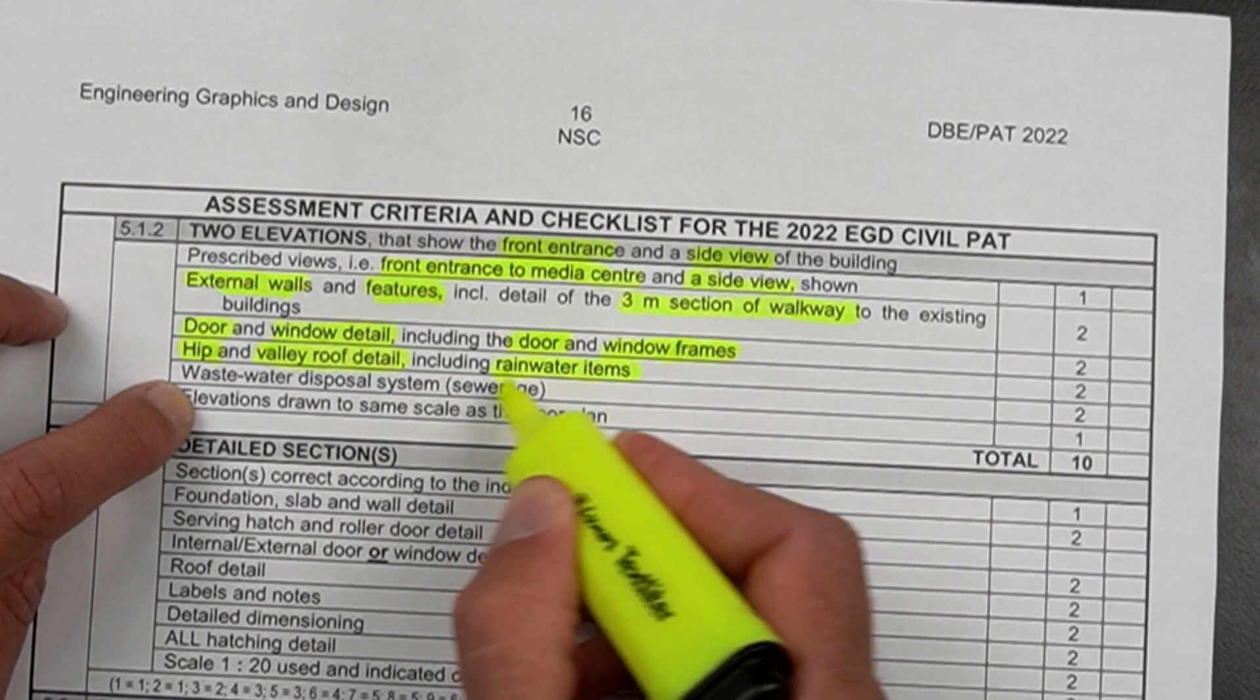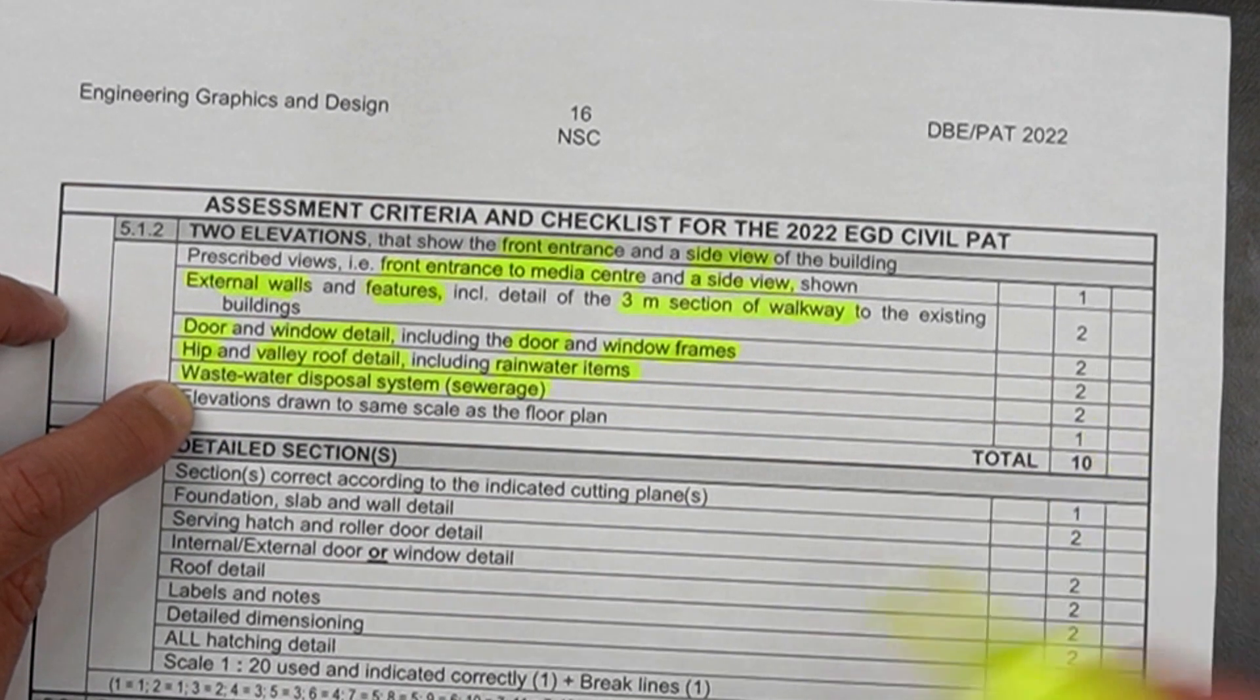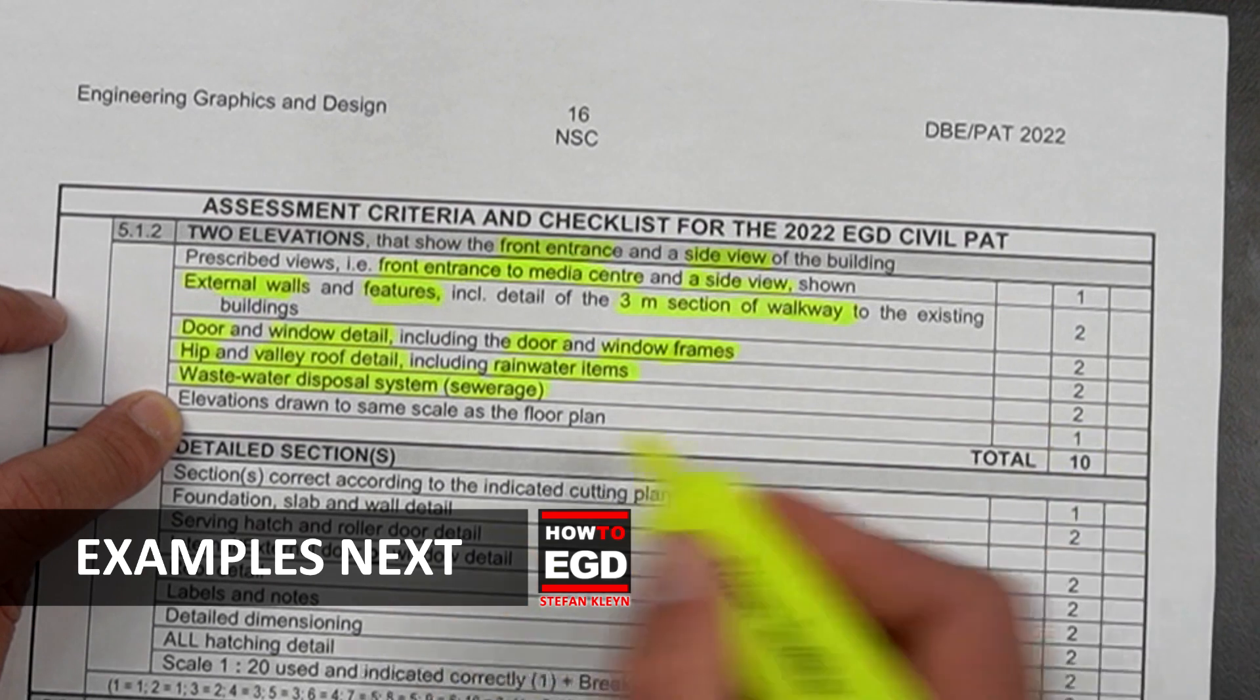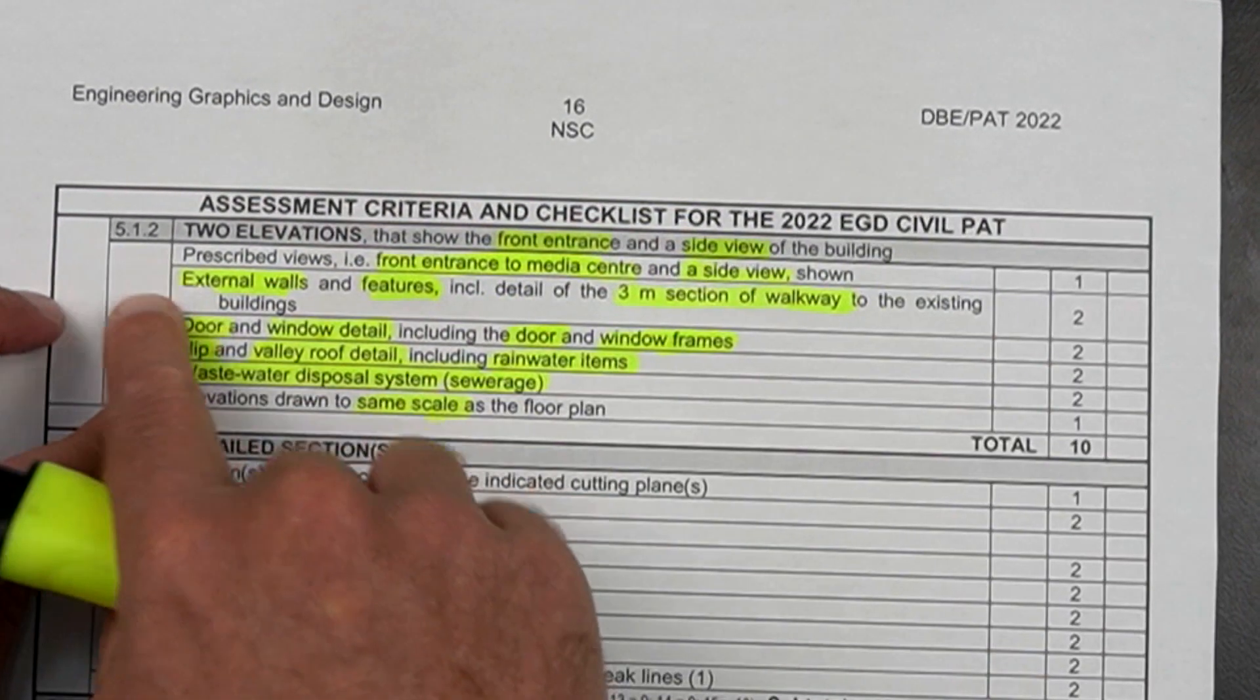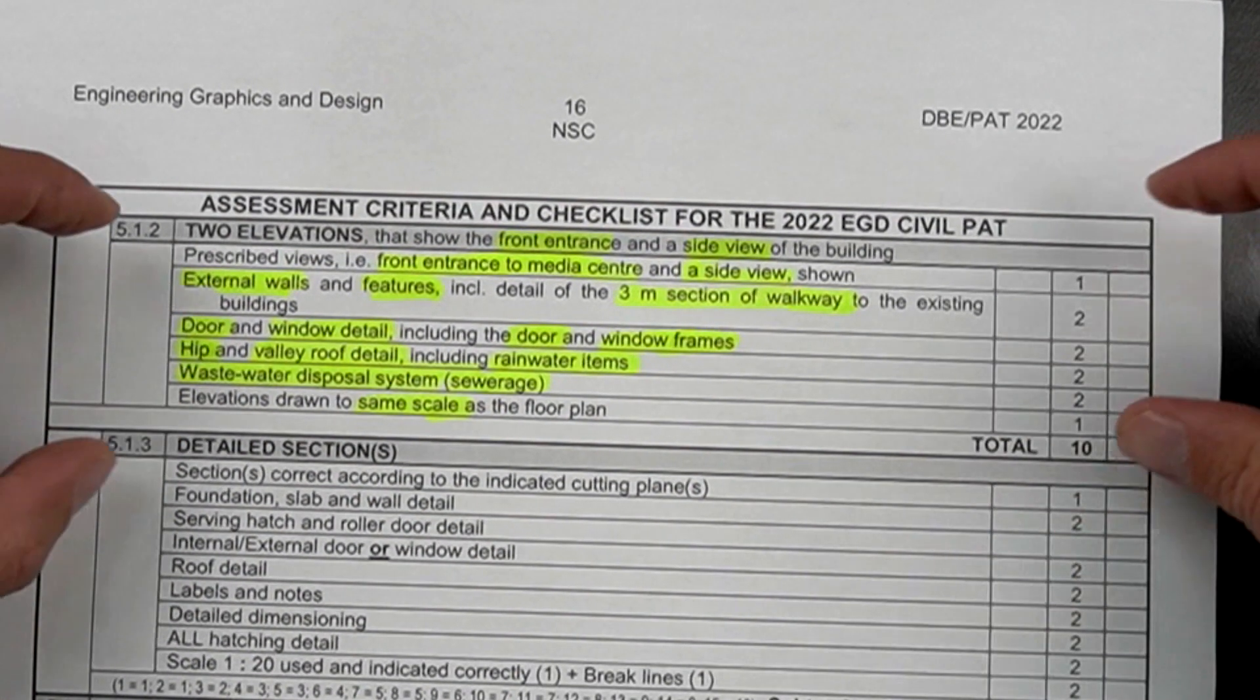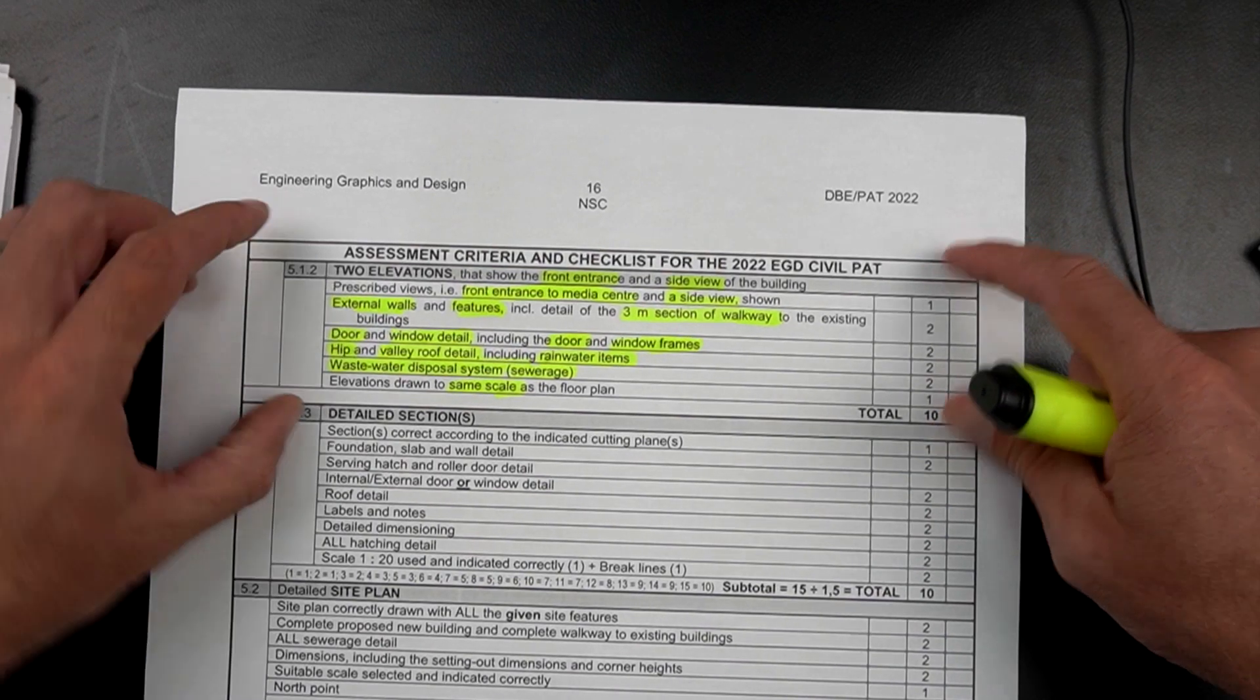Wastewater disposal systems? Are your sewer lines included? Here, I'll show you examples now. Two marks. And is it drawn to the same scale as the floor plan? One mark. So even if you've drawn all of this, but it's not to the same scale as 5.1.1, your floor plan, you are not going to get that mark. That is the detailed overview of what is required for your two elevations.